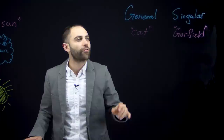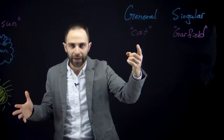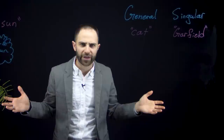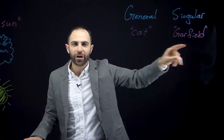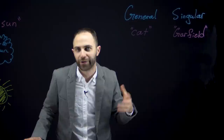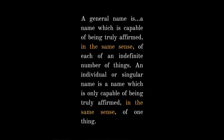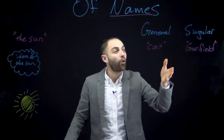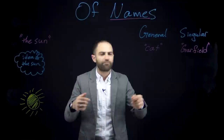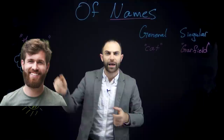For example, 'cat' is a general name because it can be used to pick out all sorts of different things — Garfield the cat and other famous cats. Garfield is a singular name because, as long as it's used with one meaning, it picks out just one cat: the orange cat that eats lasagna. Mill keeps saying 'in the same sense,' meaning with the same meaning. Garfield can be the name of that one cat, or it could be the name of a person — those names sound the same but have different meanings, referring to different individuals.